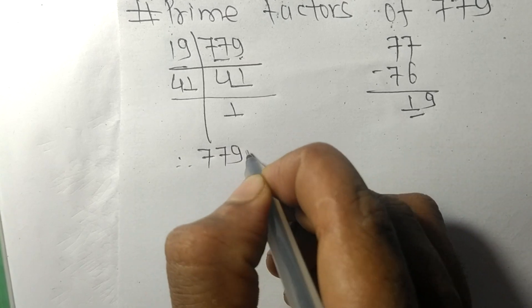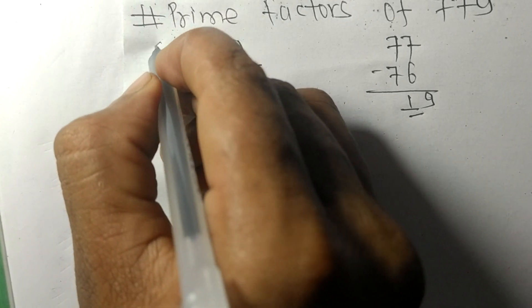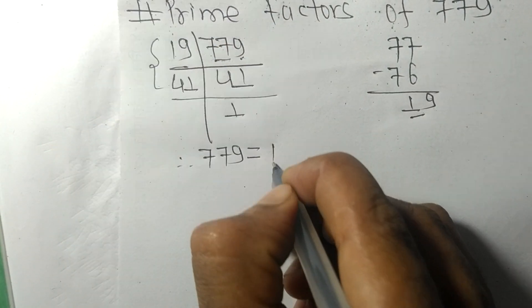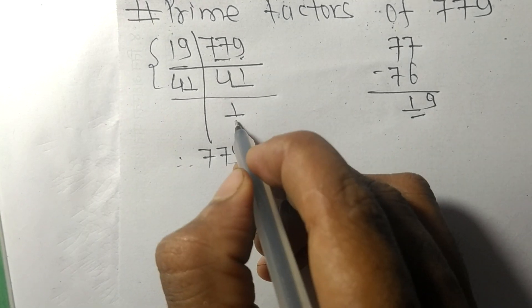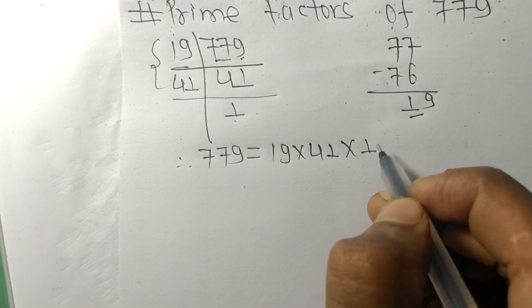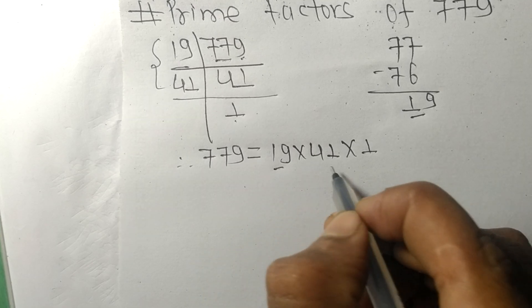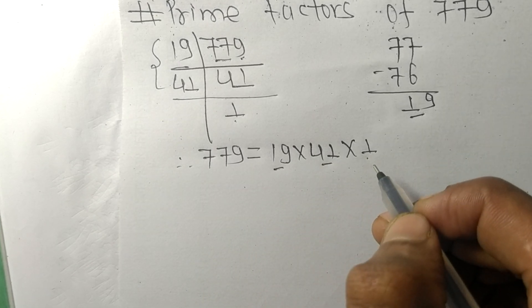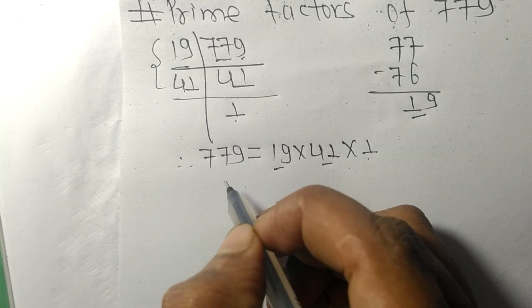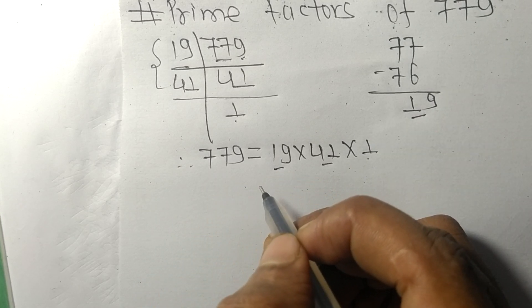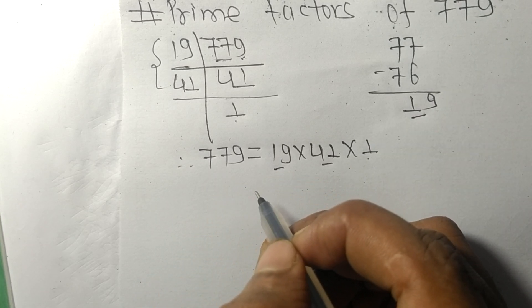Therefore 779 is equal to 19 times 41 times 1. So 19, 41, and 1 are the prime factors of 779. So this much for today and thanks for watching.